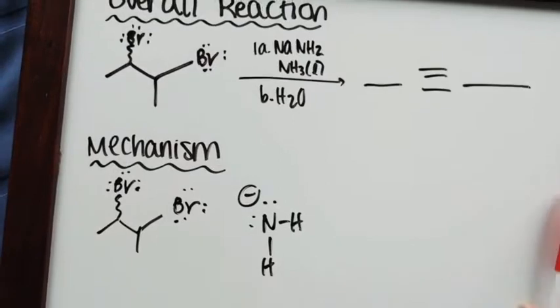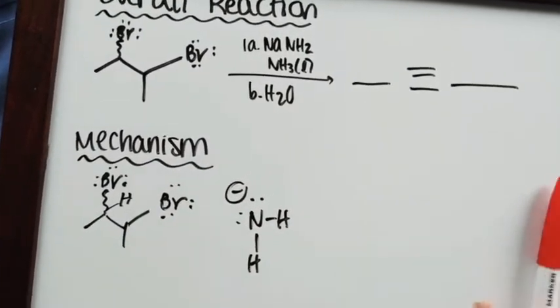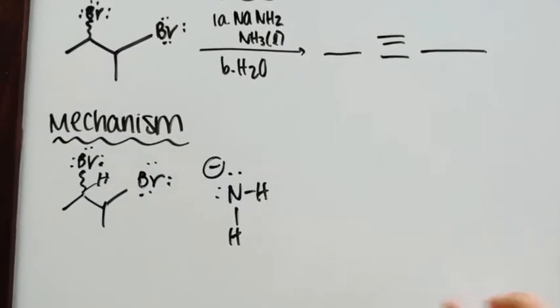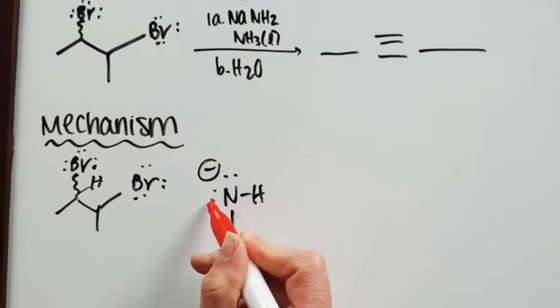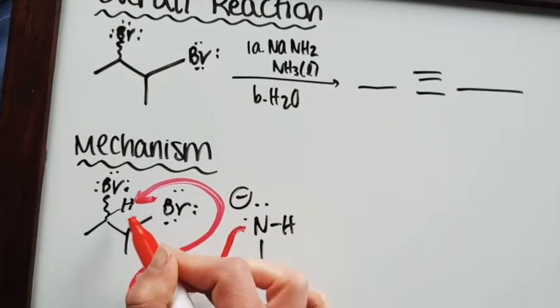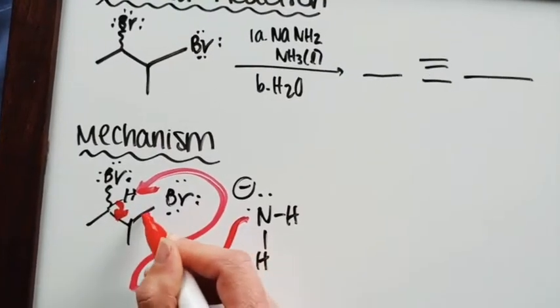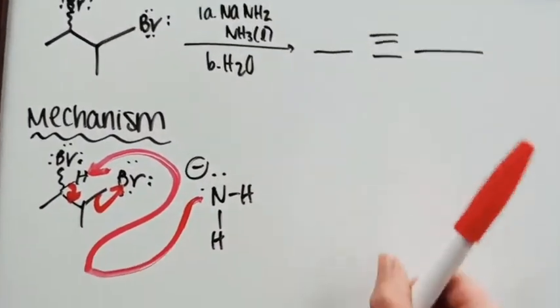So what I want to do is I want to draw out our hydrogen right here. So I'm going to pick that hydrogen for right now and we are going to have the nitrogen go over here and it is going to attack the hydrogen. The hydrogen is going to come down like this and then our leaving group is going to leave.